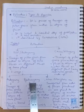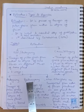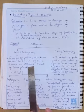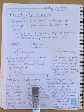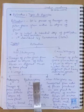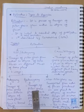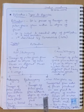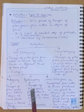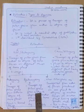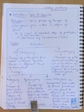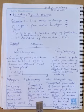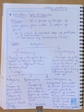The next type is geitonogamy, another form of self-pollination. In geitonogamy, the pollen grain transfers from the anther to the stigma of a different flower, but both flowers belong to the same plant. The same genetics are involved. An example is cucurbits.